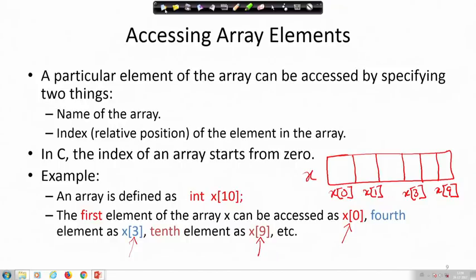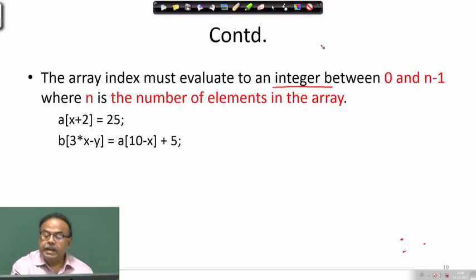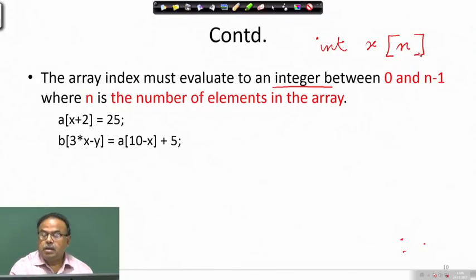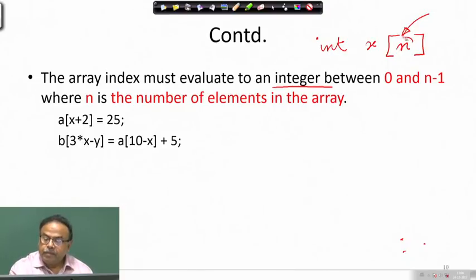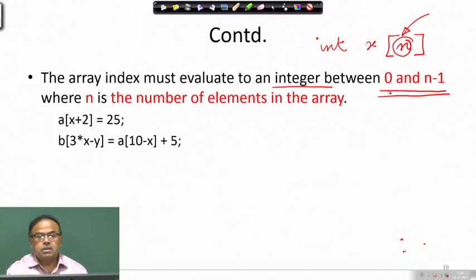These indices must be integers - that is very important. If I have an array defined as int x[n] where n is the size of the array, then the value of the index must lie between 0 and n minus 1. So if n were 20, the index must lie between 0 and 19.